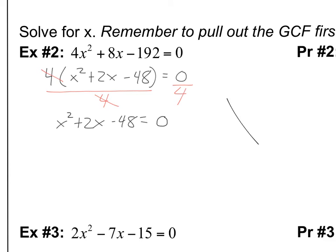So we need to factor. Again, we need something that multiplies up to 48 and it adds up to 2. I'm thinking 6 and 8 multiply up to 48, but to get a positive 2, I'm going to have to subtract. Subtract negative 6. So my factors are x minus 6 and x plus 8 equals 0.